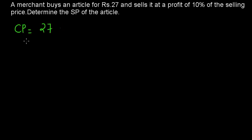He is selling at a profit of 10% of the selling price. Normally, the profit percentage or loss percentage is always given with respect to the cost price. If a question simply states the gain percentage is equal to 10%, it means the gain is calculated on the cost price. The formula is: gain percentage equals gain divided by cost price, into 100.